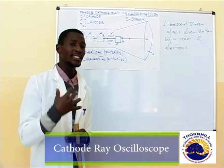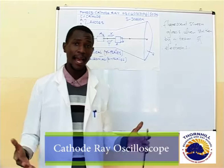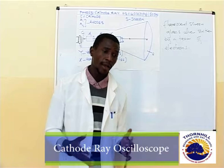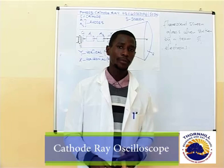Those rays that are produced are used in different electronic instruments. These electronic instruments that use this beam of electrons or cathode rays include, for example, a television set, a computer monitor, and also some other electronic instruments as well.